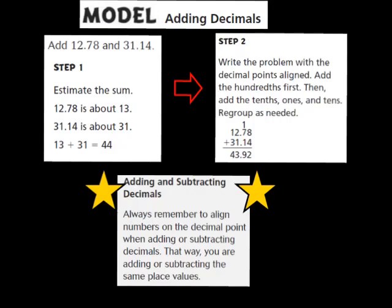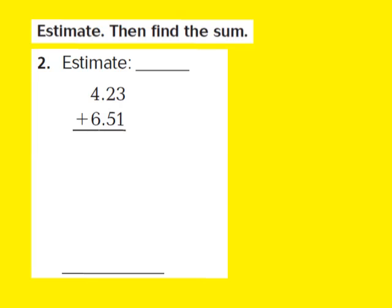Now let's put those steps together. For question number 2, our job is to estimate and then find the sum. They give us 4 and 23 hundredths plus 6 and 51 hundredths. Starting with 4 and 23 hundredths: to round to the nearest whole number, I look at the number to the right of the 4, which is a 2. A 2 tells me to keep the 4 the same, so 4 and 23 hundredths rounds to 4.